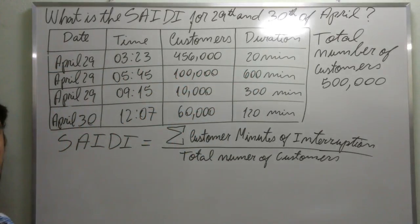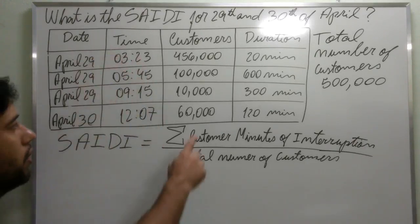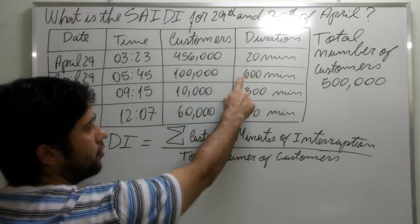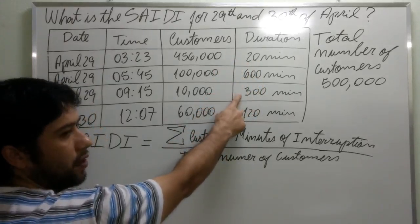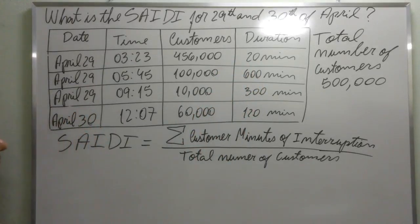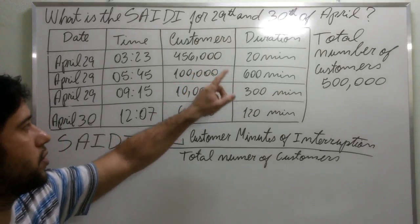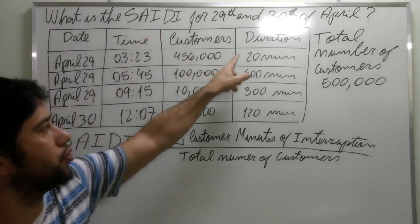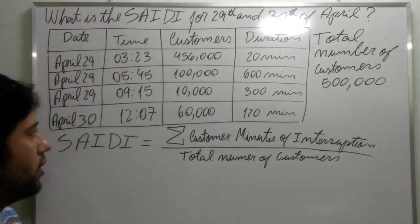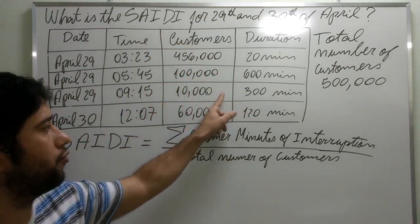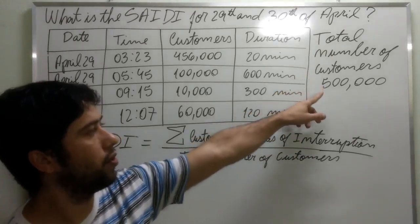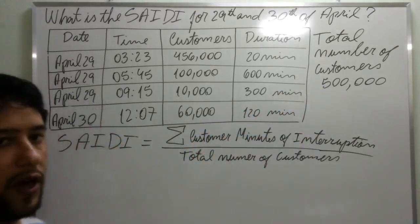To calculate the SETI for these events, we will multiply the number of customers by the duration for each event, then sum all of those results — because this is the summation in the formula — and divide the total by the total number of customers of that area of concession, which is 500,000.